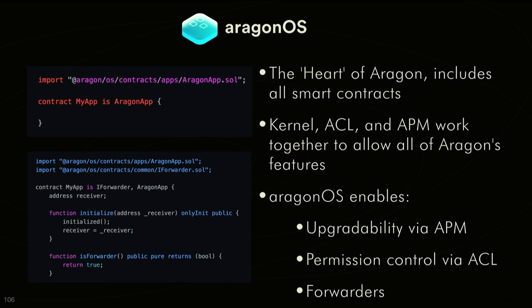Aragon OS for developers is probably one of the pieces you'll need to interact with the least in terms of things you're modifying. There are the three things you get out of Aragon OS, and the two that require the most configuration are the permissions — which are really easy to set, not much harder than a required guard or modifier in regular Solidity — and then there's the idea of forwarding. If you want to create your own forwarder instead of using something like voting, that requires a little more configuration, but for the most part you won't have to interact with Aragon OS much beyond what the existing tools provide.